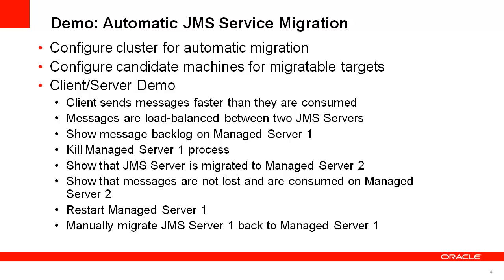To demonstrate this, I have created a message-driven bean that has a one-second wait time after consuming a message, and I have used deployment descriptors to ensure that there is only one bean per server. I will then use a client to produce messages faster than they can be consumed, which will create a backlog. I will then kill one of the servers and watch the messages that were stored on that server be consumed on a different server. Since I am using a JDBC store for JMS persistence, I do not have to worry about migrating a JMS file store from one server to another. I will then restart server one and manually migrate the failed JMS server back to the original server.